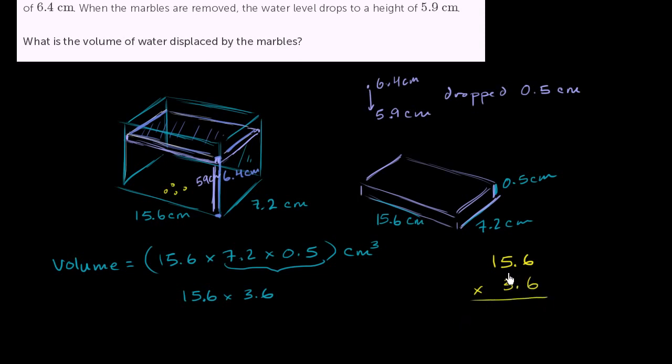So I'll ignore the decimals for a second. 6 times 6 is 36. 5 times 6 is 30, plus 3 is 33. 1 times 6 is 6, plus 3 is 9. And then let's place a 0 here. We're down in the ones place, but I'm ignoring the decimals for now.